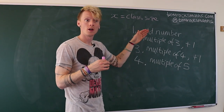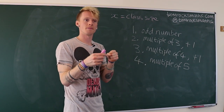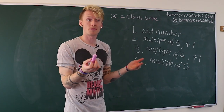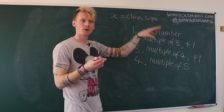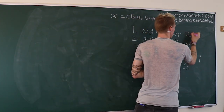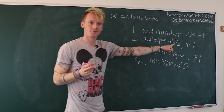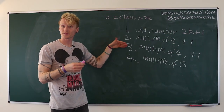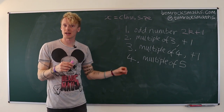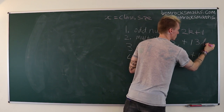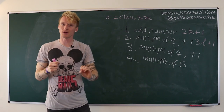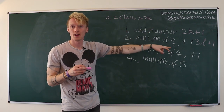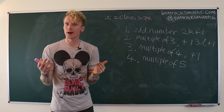Our first rule says that x must be an odd number. Even numbers are defined to be any number perfectly divisible by two, and so an odd number is one more than a multiple of two. That means x must equal two k plus one, where k can be any positive whole number. We do the same with rule number two: x must be three l plus one, where l is any positive whole number.